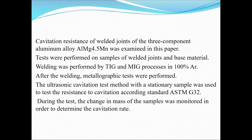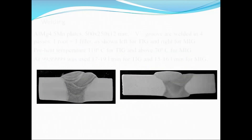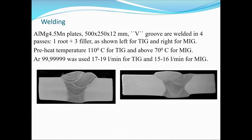Our main criterion for cavitation resistance was the mass loss, or change of mass, during the cavitation testing. You can see here macrographs of two differently welded aluminum alloy plates. Both of them were welded in four passes, and some basic data is given in this slide.